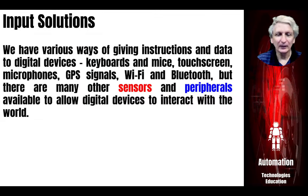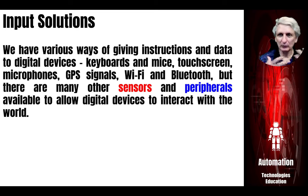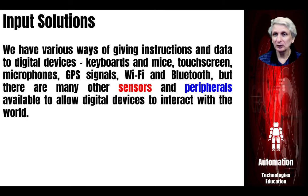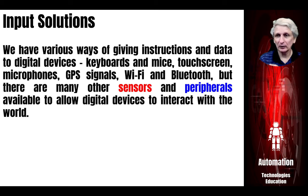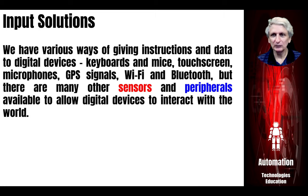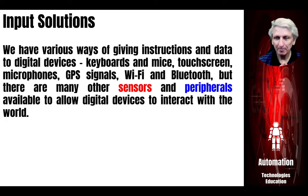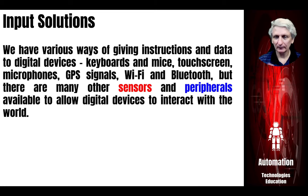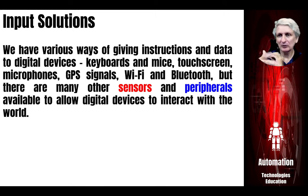The first step in automation is having input processes — something telling the computer to do things. We can have programs tell the computer what to do, but we often also want to change that, using our keyboard, mouse, or touch screen to give the computer other instructions. We can also attach sensors, which allow the digital device to take in information about the world around it — something simple like a temperature sensor, or a video camera that can detect images like someone's face or when someone has moved into a field of view.